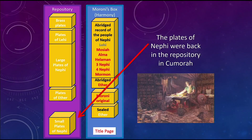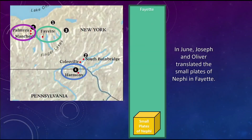Where were the plates of Nephi? They were back in the repository with all the other original plates — we just talked about that. In June, the next month, Joseph and Oliver translated the small plates of Nephi in Fayette, New York. On the map here, the purple circle shows the original plates in the Hill Cumorah; in green is Fayette where they translated the plates of Nephi; and blue is Harmony where they translated the abridged plates. Those are the three locations. So the question is: how did they get the plates of Nephi?